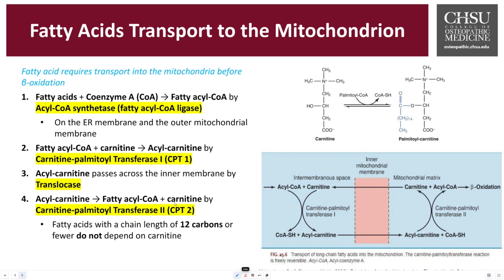The acyl carnitine then passes through the inner membrane of the mitochondria with the help of another enzyme called translocase. The acyl carnitine is then reshuffled back into fatty acyl-CoA and carnitine, with a second isoform of the enzyme, carnitine palmitoyltransferase 2, CPT-2.